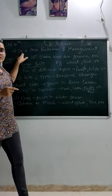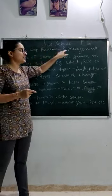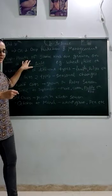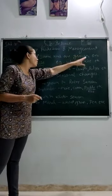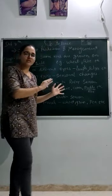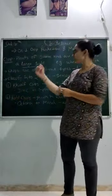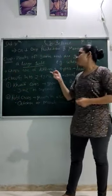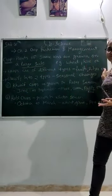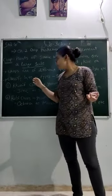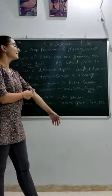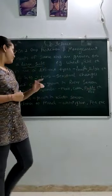We know the chapter's name - crop production and management. Coming to what is crop? So crop is a plant of same kind that are grown on large scale. Large scale means big area with a lot of same kind of plants - that is crop. Now, crops are of different types. It can be fruits, cereals, pulses, etc.